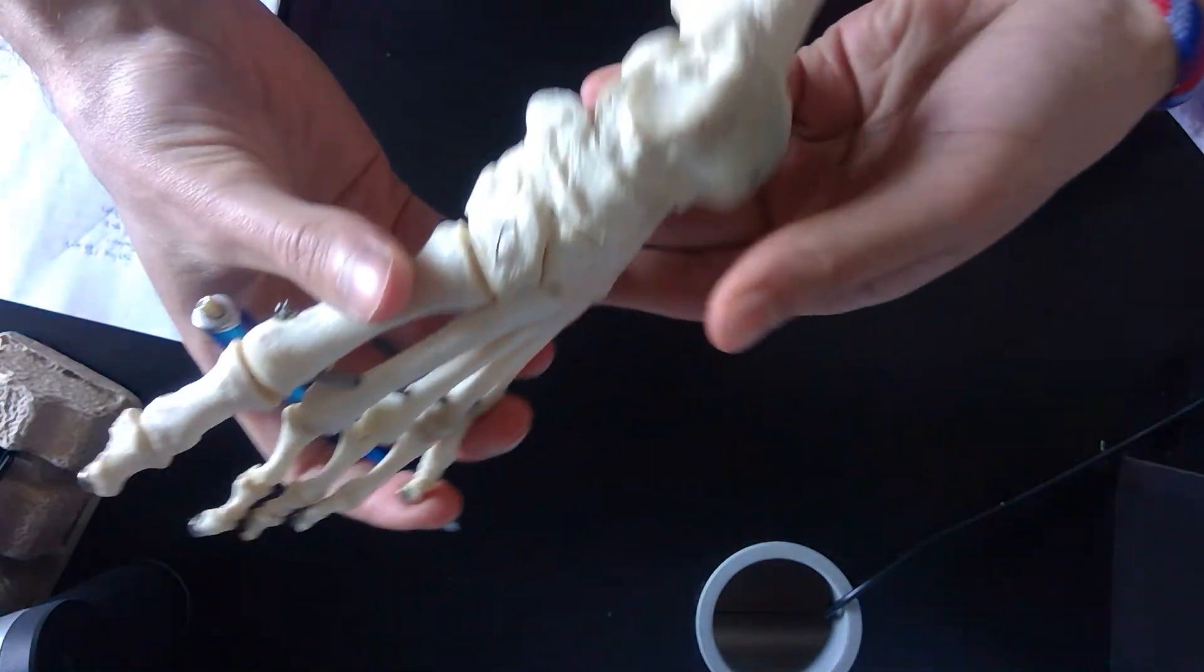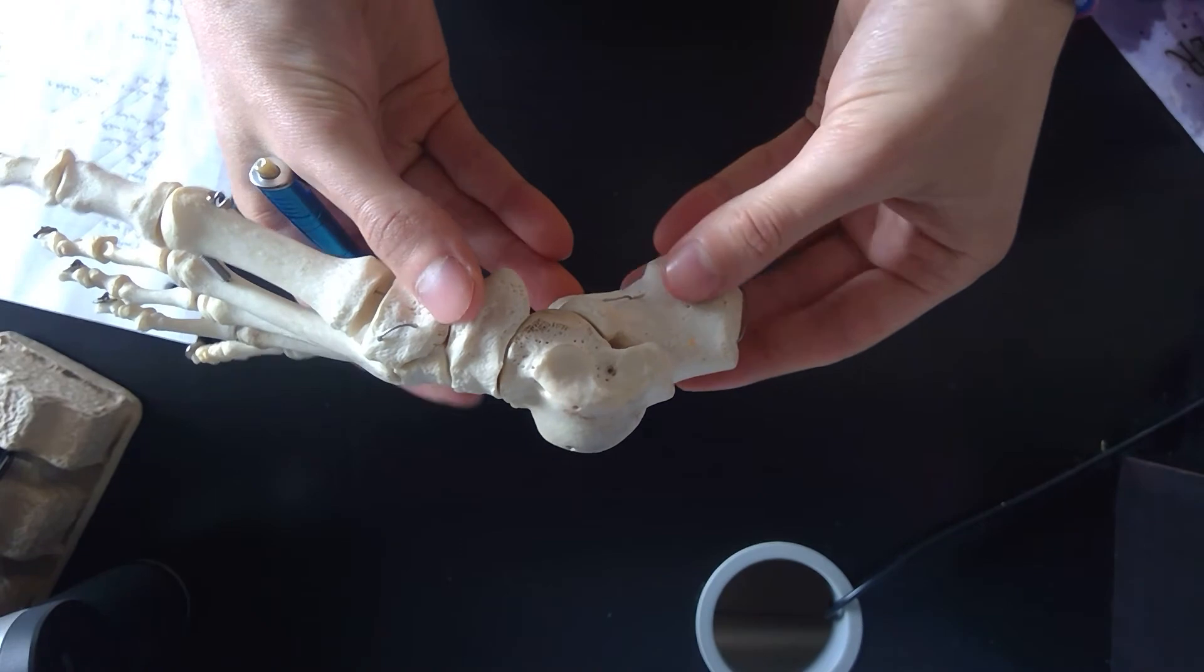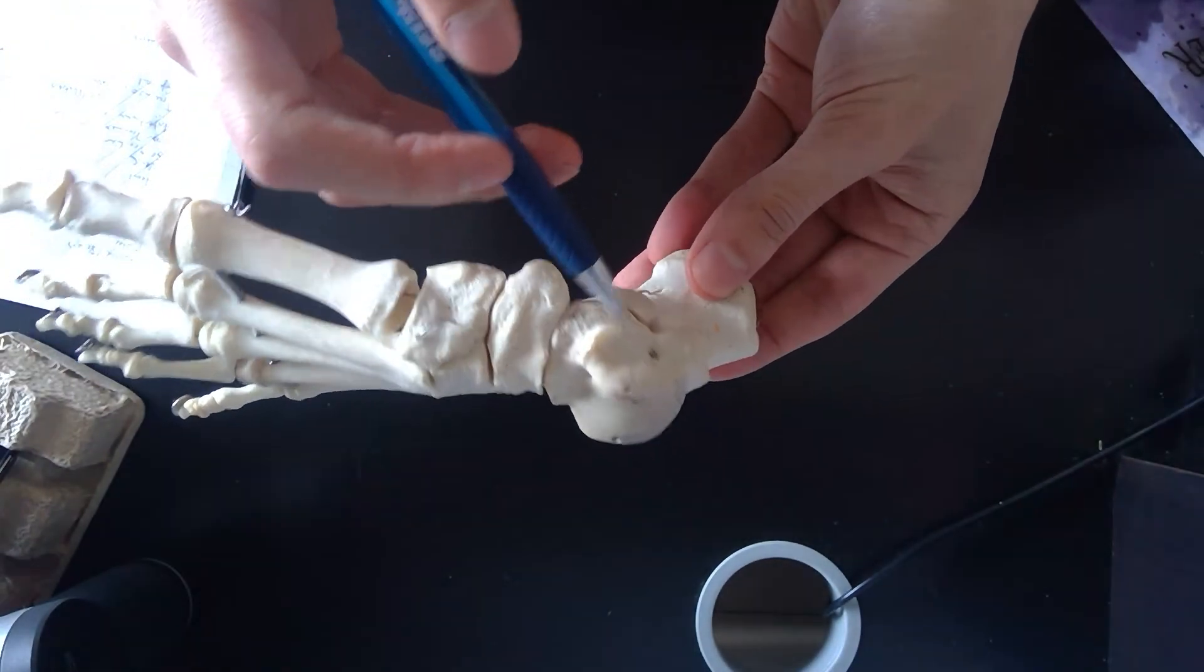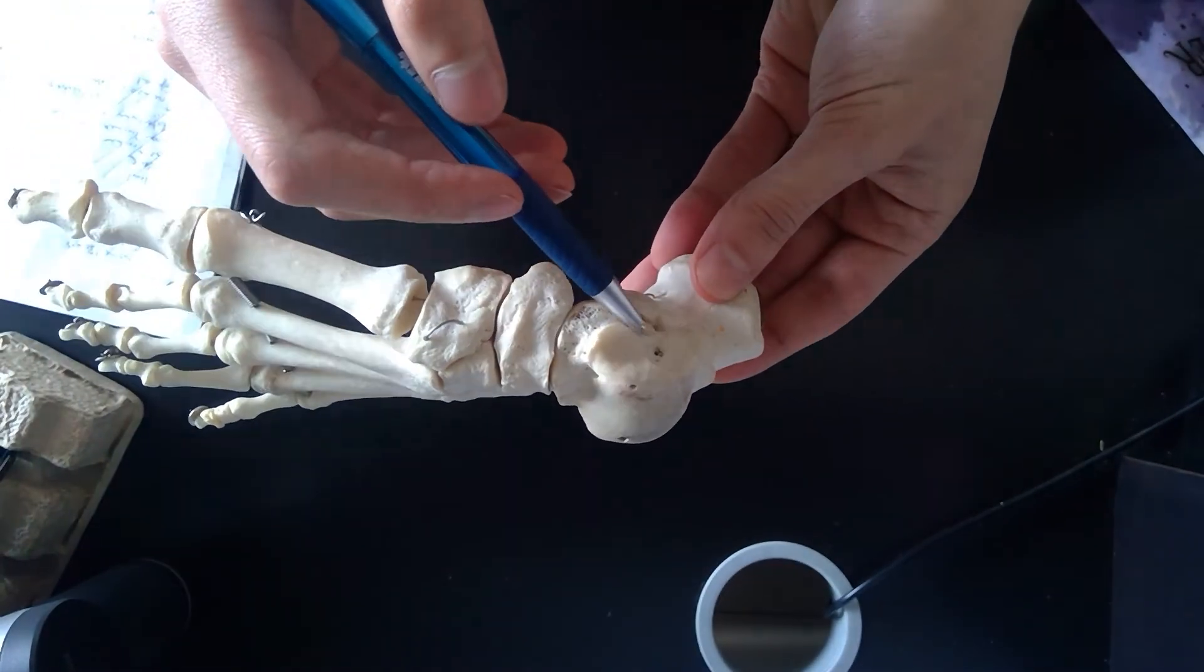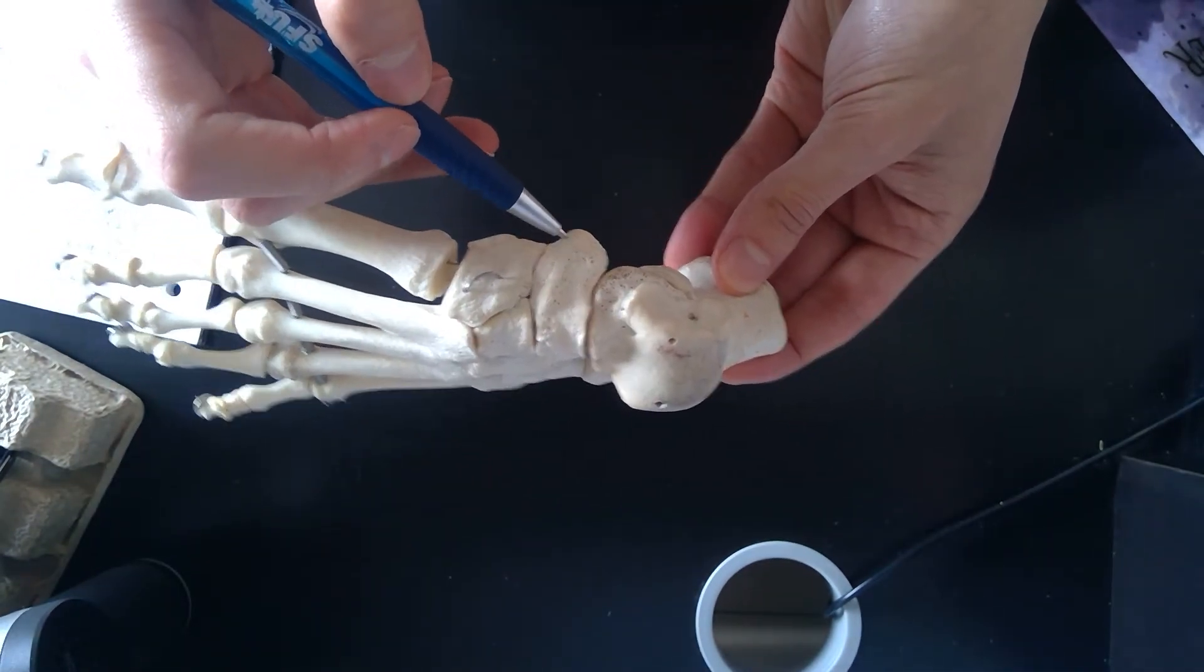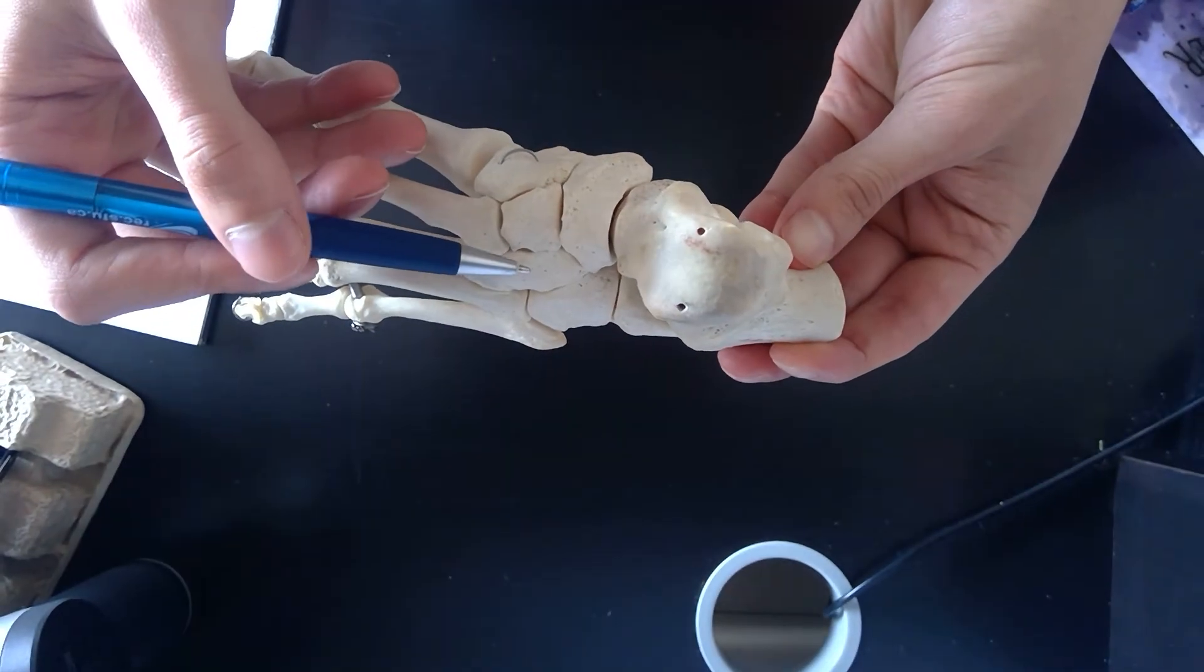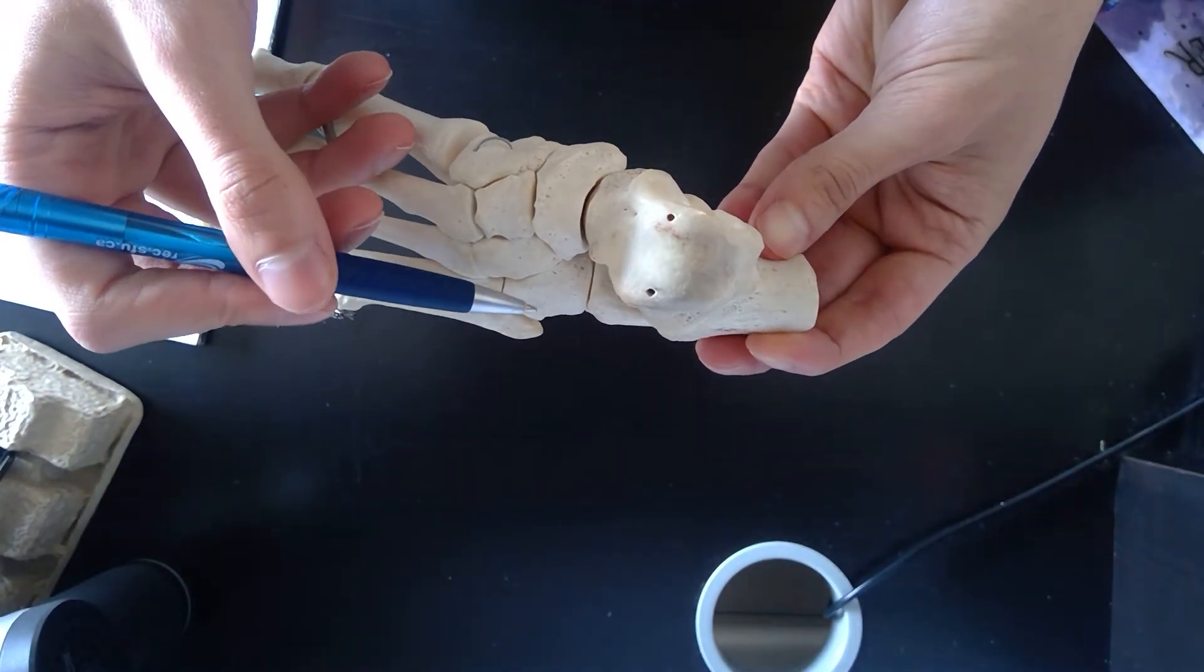So now I'm just going to quickly review it again, but this time from the medial aspect. We have our calcaneus shown right here, our talus, our navicular bone, our medial cuneiform, intermediate cuneiform, lateral cuneiform, and the cuboid.